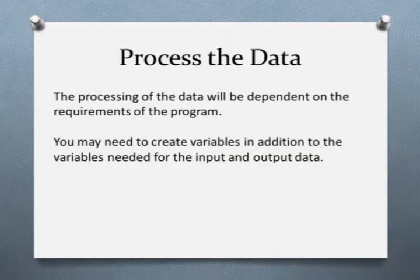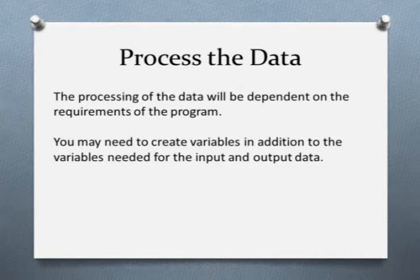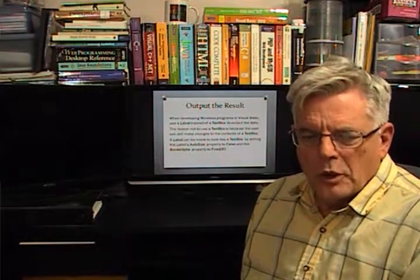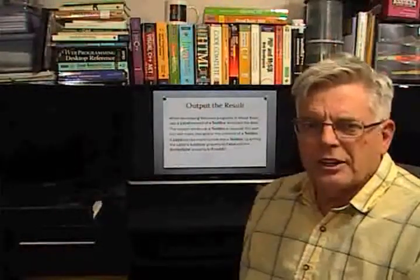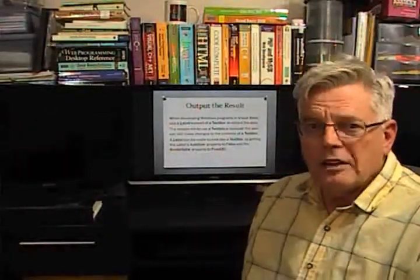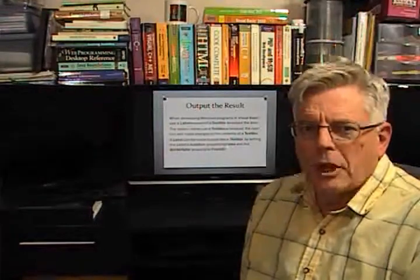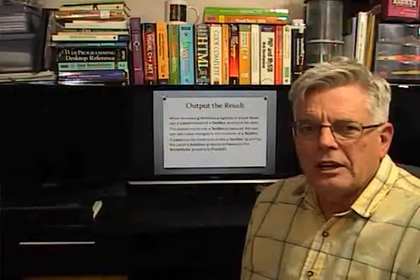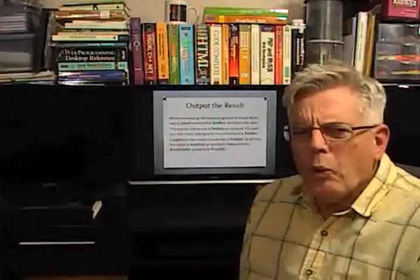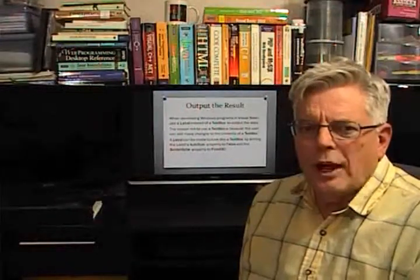In the process of the data section, the processing will be dependent on the requirements of the program. You may need to create extra variables in addition to the variables needed for input and output data. In Visual Basic, when you do an output, it's probably best to use a label instead of a text box. You can even make a label look like a text box by setting the 3D property and a few other things, but we don't want to use a text box for output.